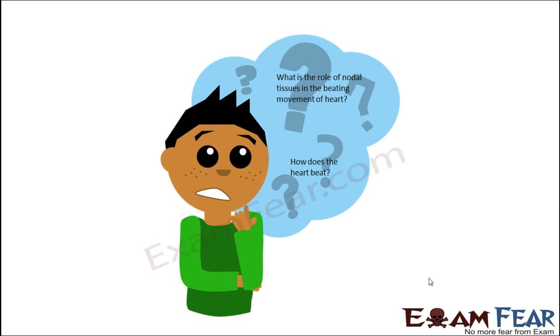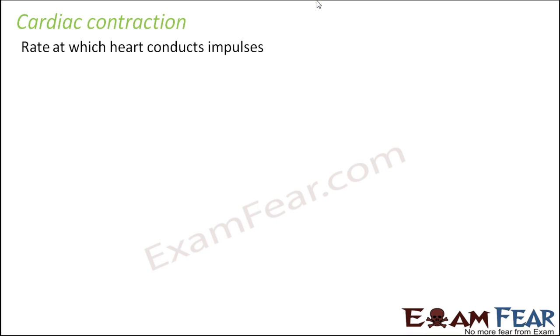We got to know that some impulses get generated and they get conducted to different parts of the heart. But how does that cause the beating of the heart? That is still not very clear. Now the question is: how does the heart beat? So let us now try to understand the process of cardiac contraction — how the nodal tissues help in cardiac contraction. Cardiac contraction is the rate at which the heart conducts impulses, which is the rate at which the heart will beat.